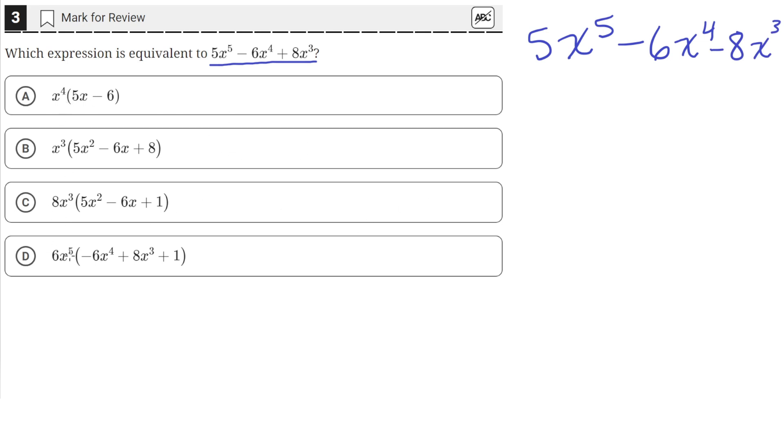So it seems here they just factored out from the original equation. So looking at all of these, we see that we can't really factor out a constant because these coefficients here don't have any factors in common.